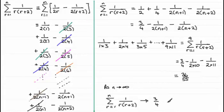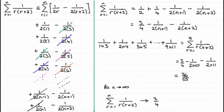So that's the difference method. Normally the leading question will ask you to split the fraction into partial fractions first. Then let r = 1, 2, 3 and write terms directly underneath one another until you see the cancellation pattern emerge — this only works when you have a minus between your terms, which is why it's called the difference method. Once you've found the pattern, write down the surviving terms and apply the result for specific values of n or as n tends to infinity.